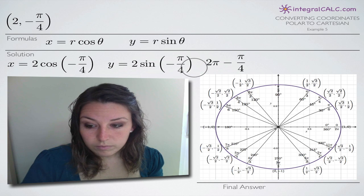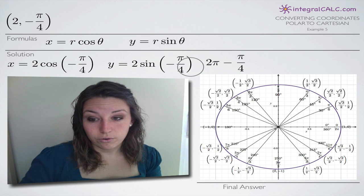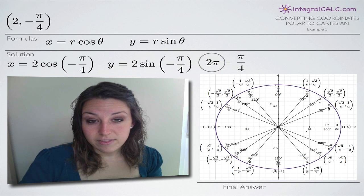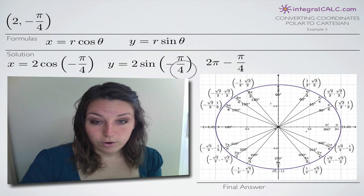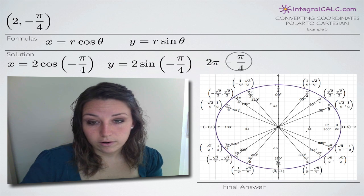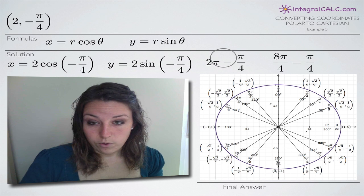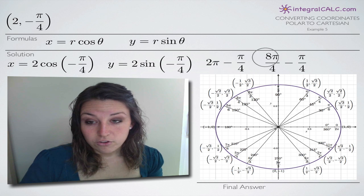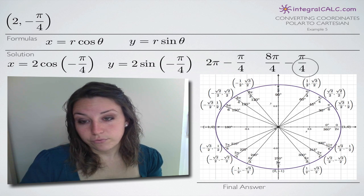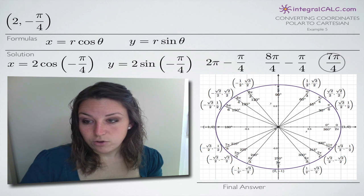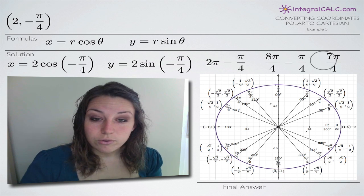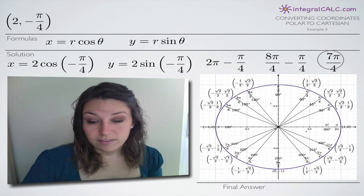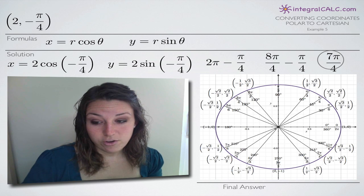To convert the angle, remember that a full revolution around the unit circle is two pi, or 360 degrees. So you take two pi and add negative pi over four. Finding the lowest common denominator, you multiply two pi by four over four to get eight pi over four, then subtract pi over four, which gives you seven pi over four. So negative pi over four is the same angle as seven pi over four.